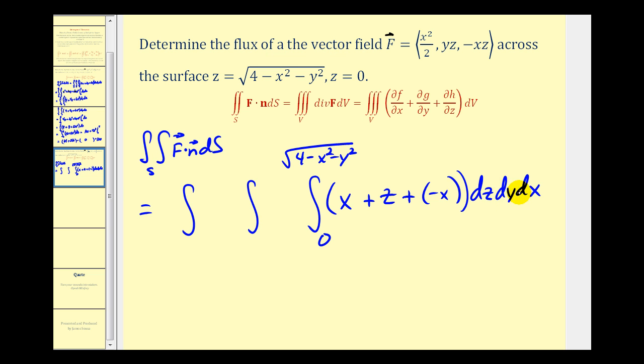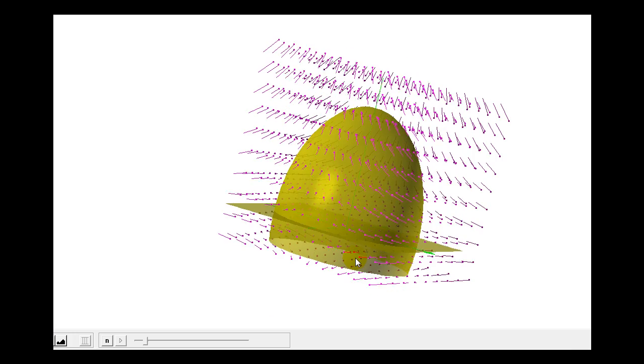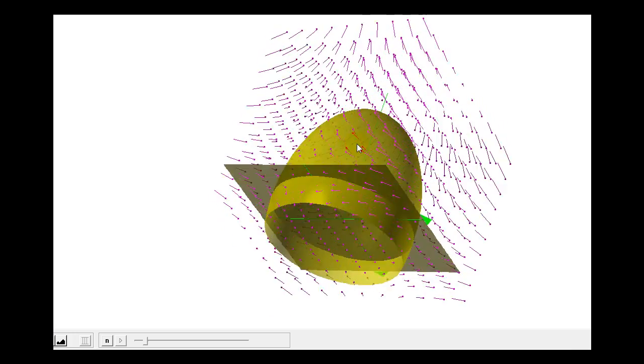Now for limits of integration for Y and X, let's sketch the XY trace. Setting Z equal to zero and squaring both sides, we have X squared plus Y squared equals four. So we have a circle with radius two centered at the origin. We can see that visually by rotating this graph.